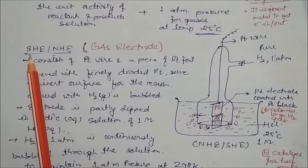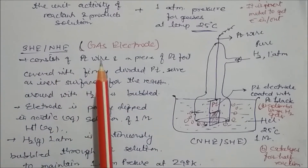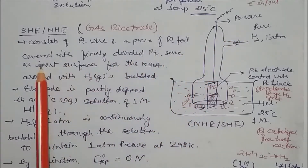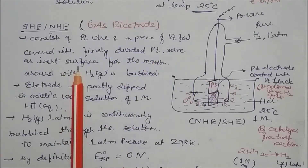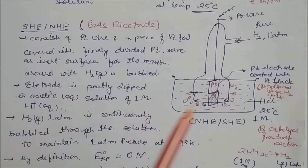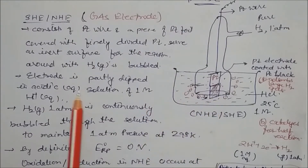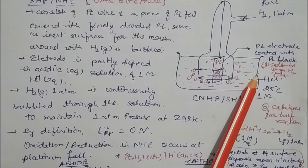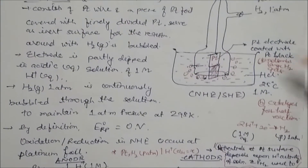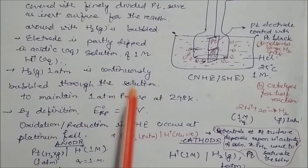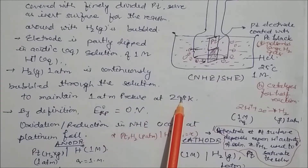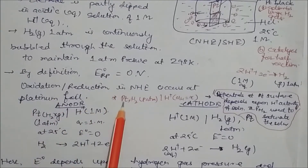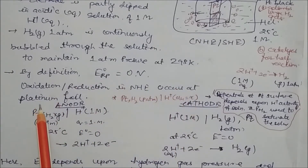The Standard Hydrogen Electrode (SHE) or Normal Hydrogen Electrode is a gas electrode. It consists of a platinum wire — a piece of platinum foil covered with finely divided platinum — which serves as an inert surface for the reaction. Hydrogen gas is bubbled around it, and the electrode is partly dipped in an acidic aqueous solution of one molar H⁺. By definition, E⁰ of the reference potential is 0 volts. Oxidation and reduction of the NHE occur at the platinum foil.